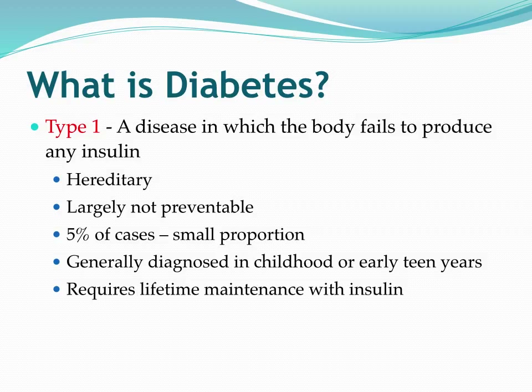Type 1 diabetes is simply a disease in which the body fails to produce any insulin and it's primarily hereditary, and because it's hereditary it's largely not preventable. It only represents about 5% of all cases of diabetes, and of course it requires lifetime maintenance with insulin. We generally diagnose this in early childhood or early in the teenage years.